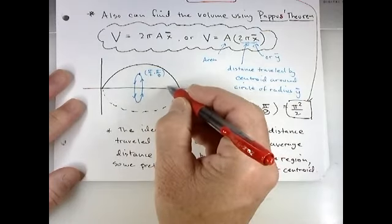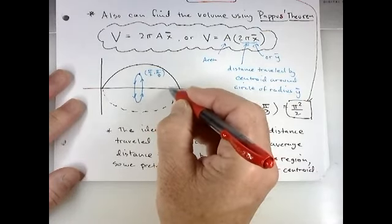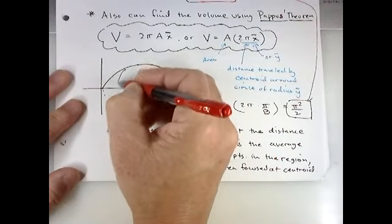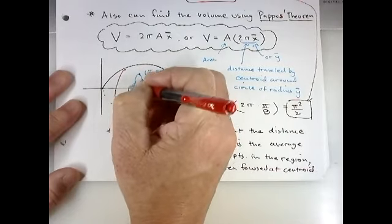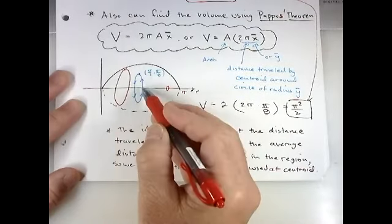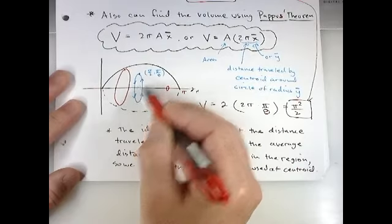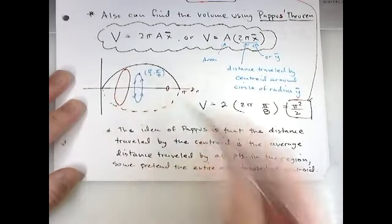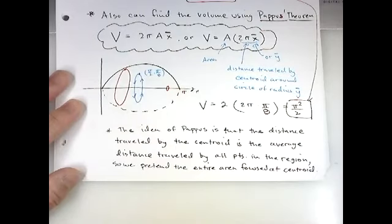So if I have a point here and I revolve this around the x-axis, it's not going to travel around a very big circle. If I choose a point up a little higher, that's going to travel around a bigger circle as it goes around the x-axis. So you can think of the centroid as the average distance traveled by every single point in the region. And so we multiply that by the area of the region. That gives us the volume as well.